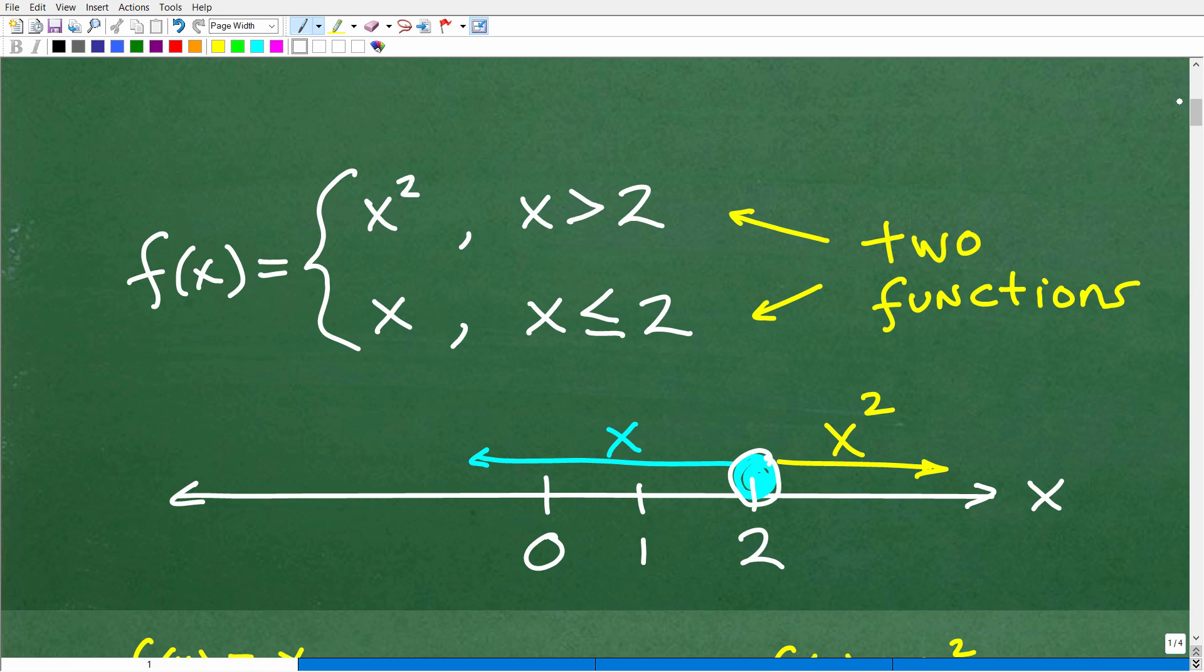So, let's talk about piecewise functions. I'm just going to get into a little mini crash course on this topic. Effectively, what we have is two functions. So we have this one function, f of x. It's x squared, sometimes, and it's x at other times.